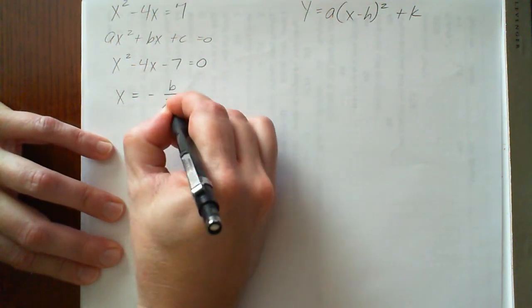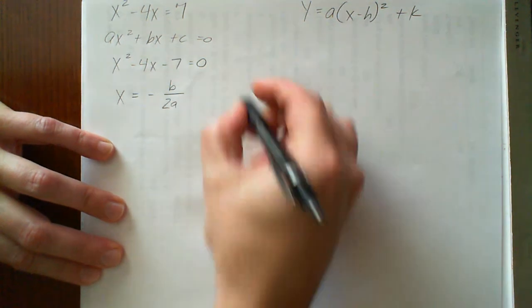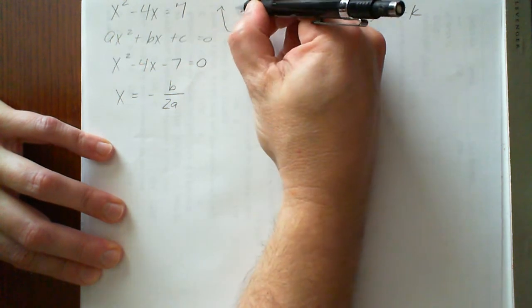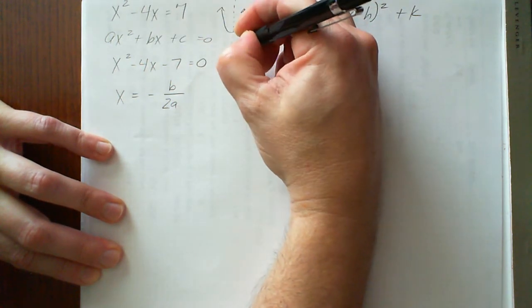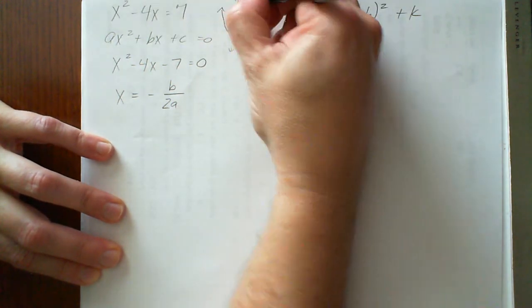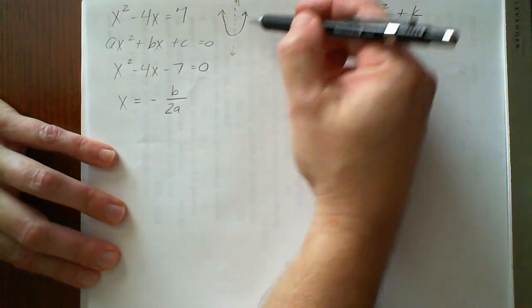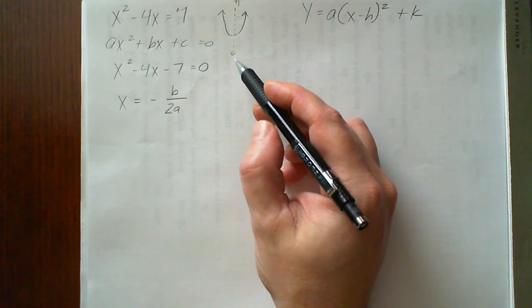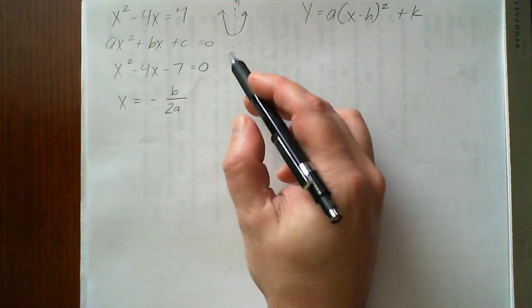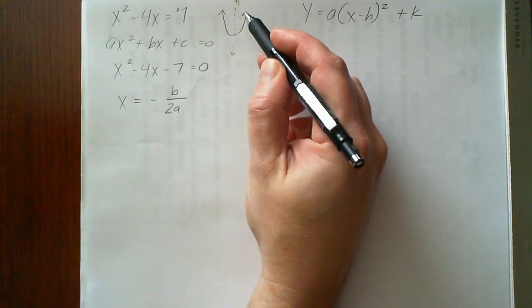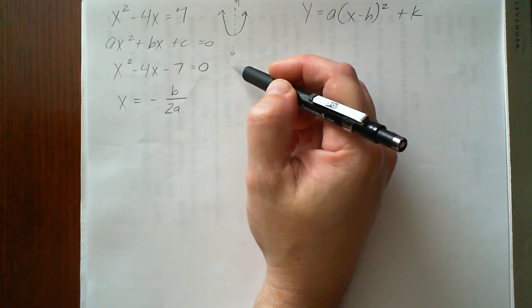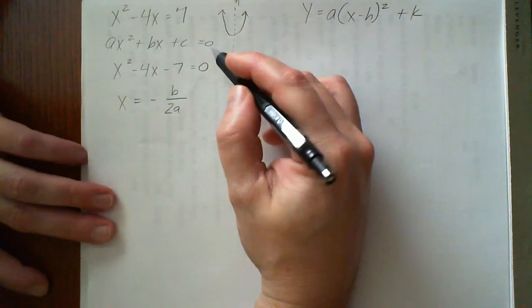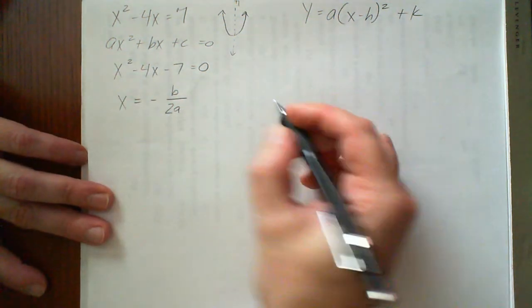And it's negative b over 2a. When we say axis of symmetry, if I have a parabola like something like that, the axis of symmetry is just the equation of the line that basically cuts that parabola right in half. So we're looking for the equation of this line. Now, with these parabolas, they're all going to be either a parabola with the ends going up or a parabola with the ends going down. So all of our equations for our axis of symmetry will be vertical lines, meaning they'll be x equals some numerical value.